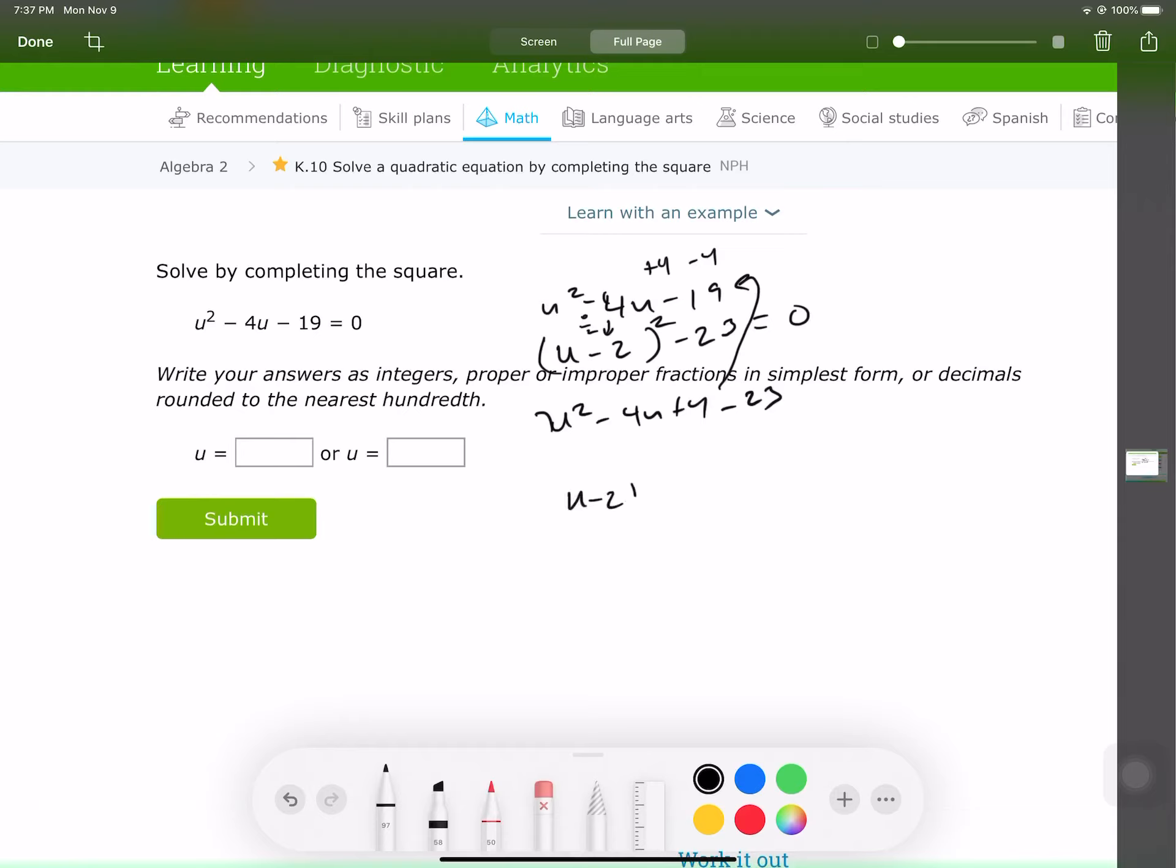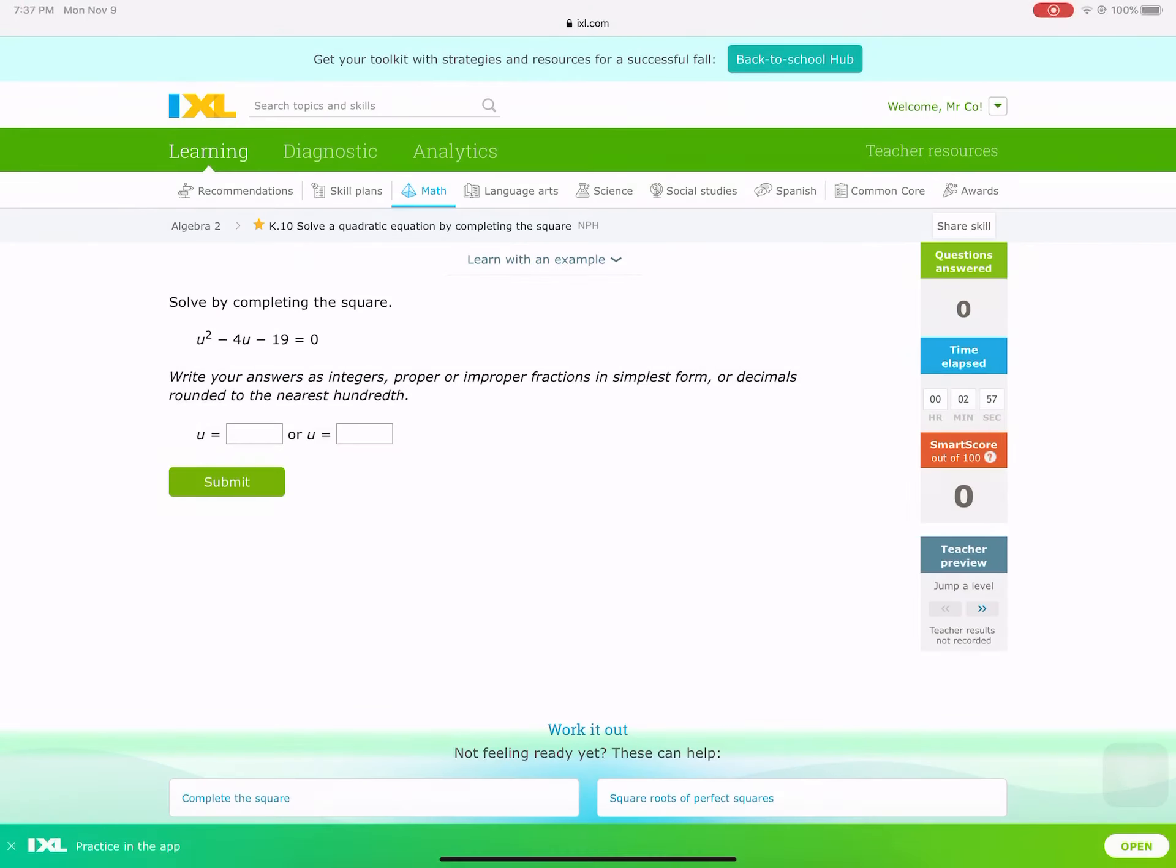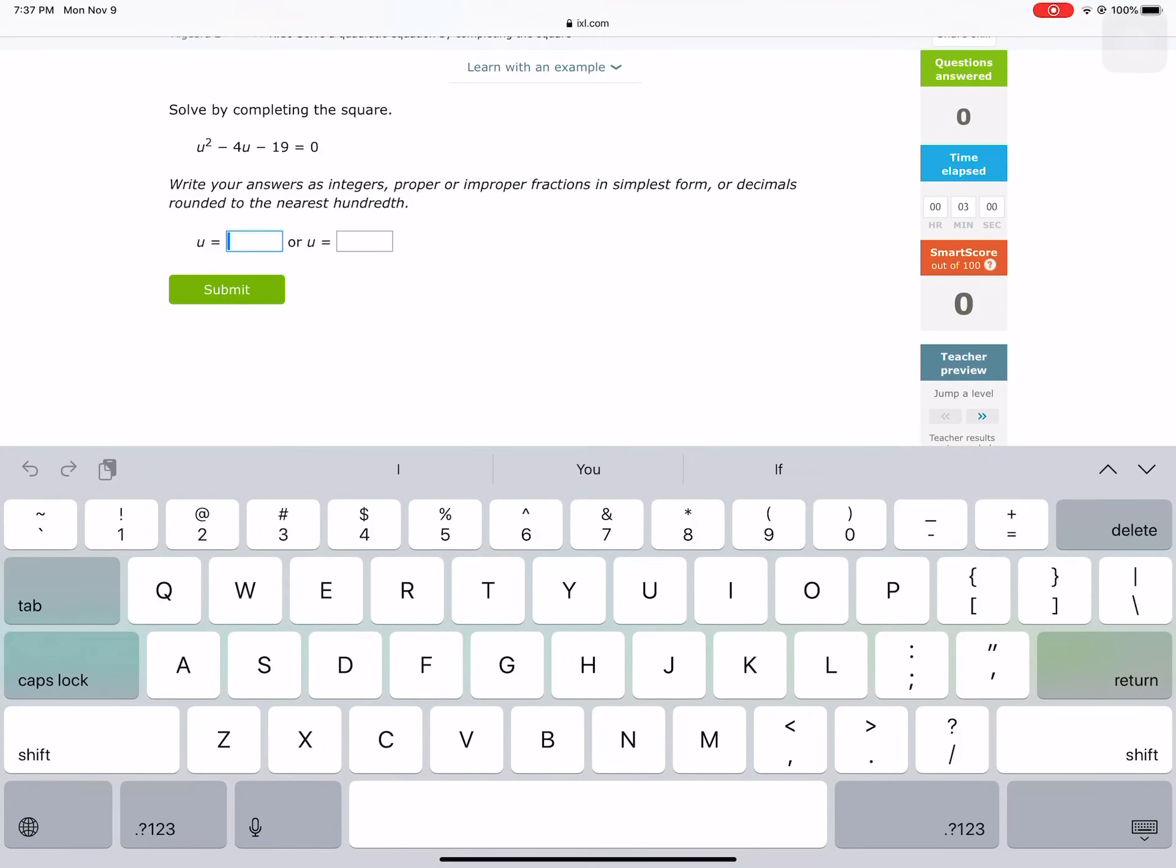So from u minus 2 squared minus 23 equals 0, we're going to go ahead and solve for u. So we get rid of the 23, then the 2, and then the squared. We can do this in one step. So u is equal to 2 plus and minus the square root of 23. We have u equals 2 plus square root of 23, and u minus square root of 23.